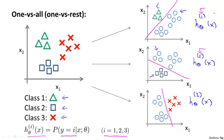So in the first instance, for this first one up here, this classifier was learning to recognize the triangles, so it's thinking of the triangles as a positive class. So h superscript 1 is essentially trying to estimate what is the probability that y is equal to 1, given x and parameterized by theta.